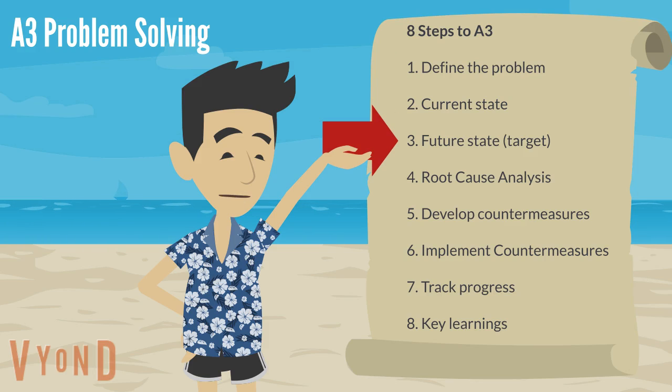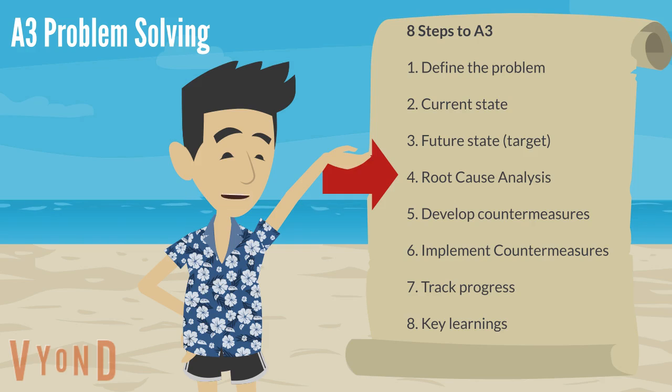Three: future state. This is our target — where do we want to be in the future? Four: root cause analysis, where we use tools like fishbone and five whys.